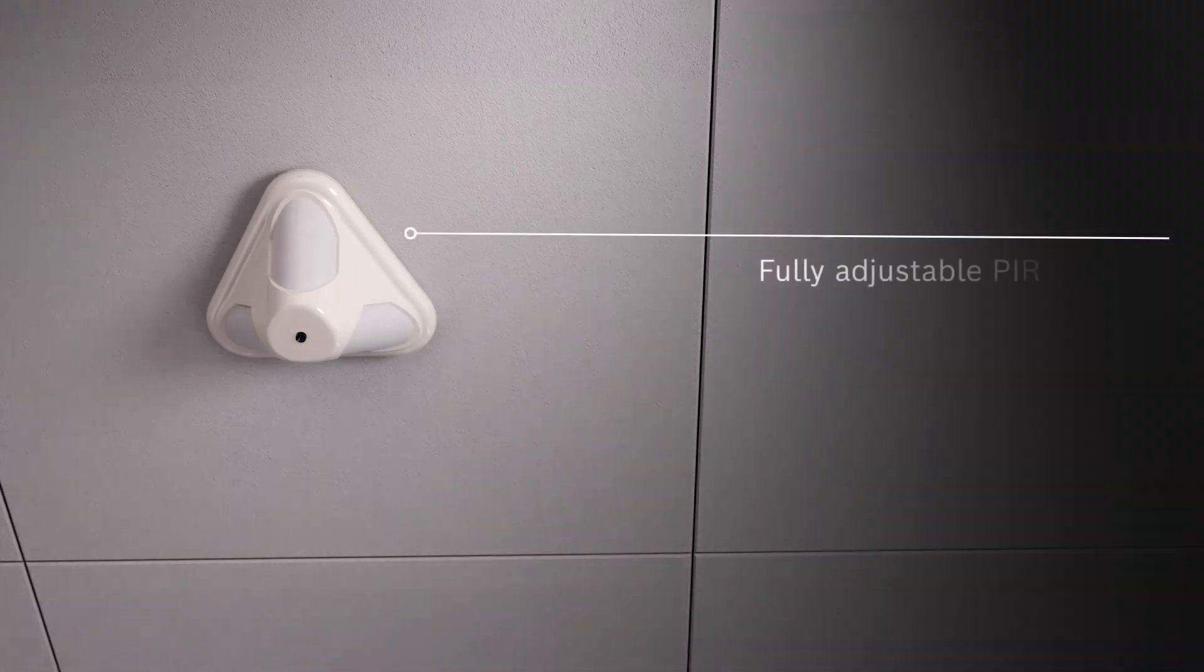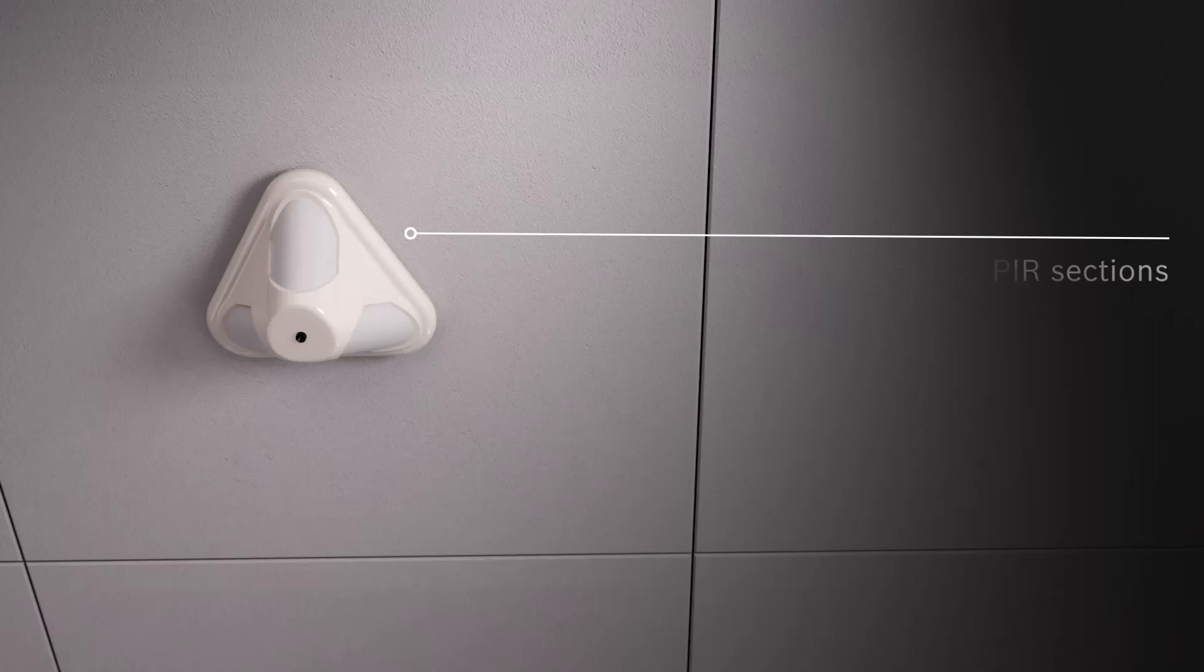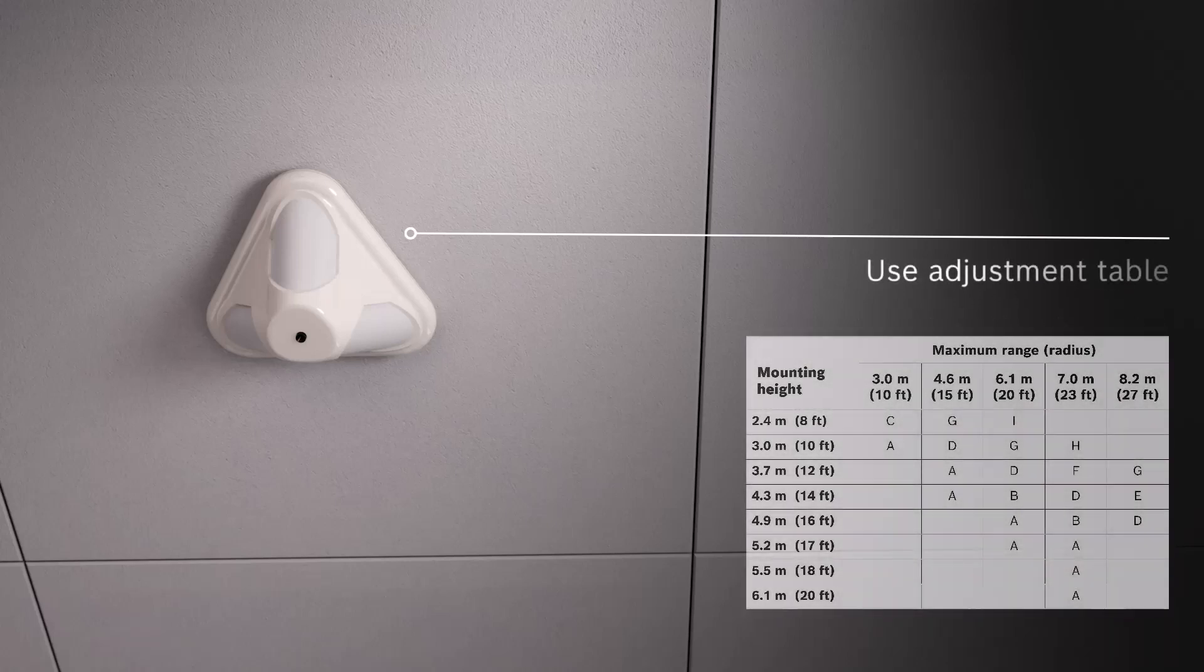In summary, ceiling mount motion detectors have three separate PIR sections that are fully adjustable. The maximum range of the detector depends on the mounting height and the vertical adjustment of the lens. Use the optical module adjustment table to adjust each PIR section.